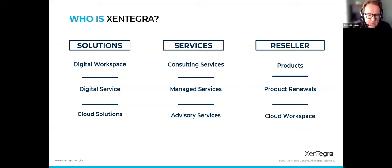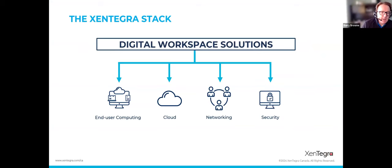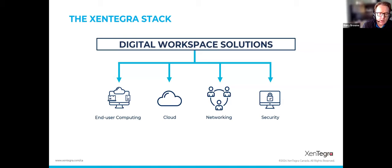This slide really simplifies what we do as a company. We provide solutions, services, and products — but the key takeaway is the value we add behind the products we sell. The Zintegra stack covers end-user computing, major cloud initiatives across Azure, AWS, and GCP, a very robust networking practice, and a relatively new security offering. We hired the best talent available to kick off that security practice about 18 months ago, and it's going very well.